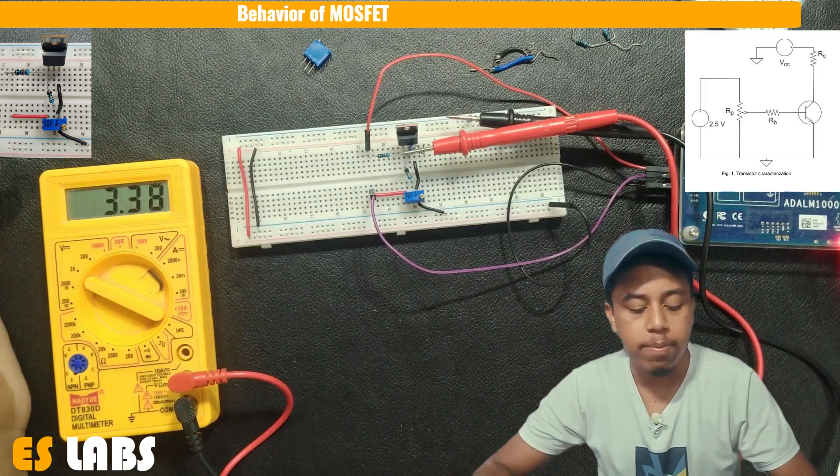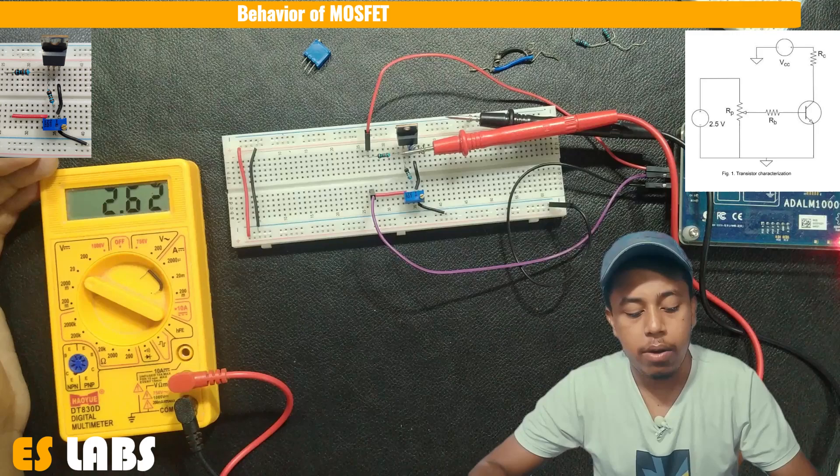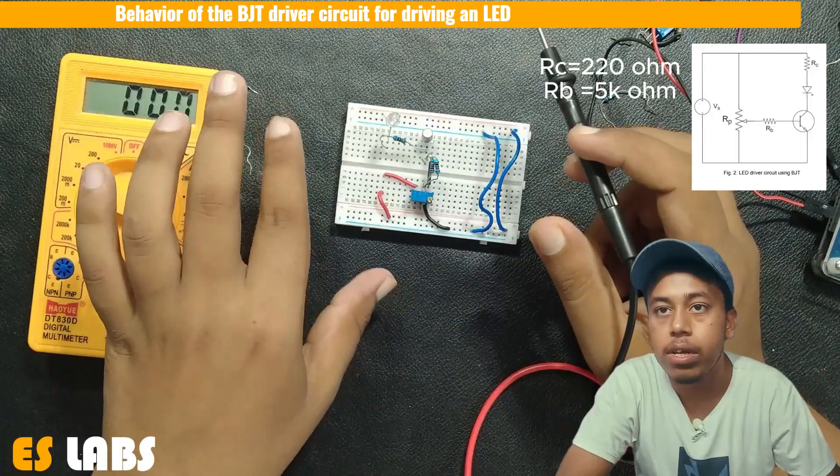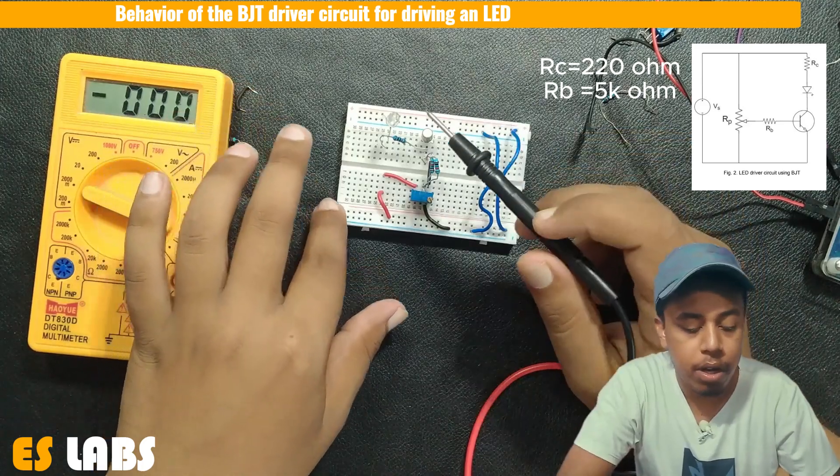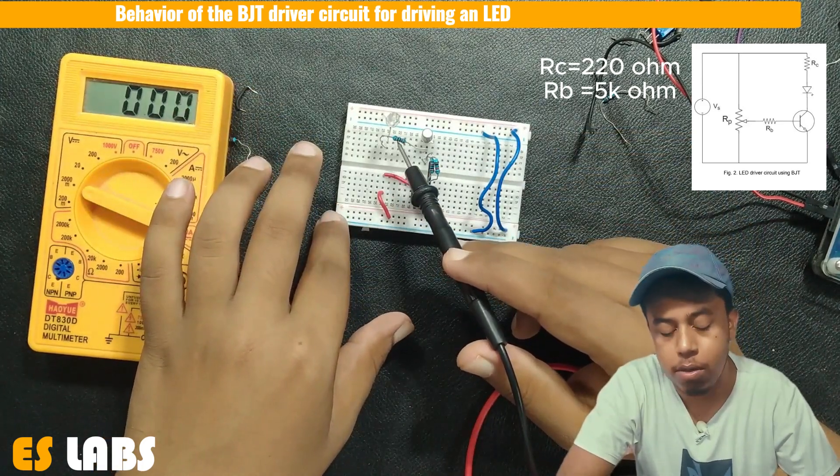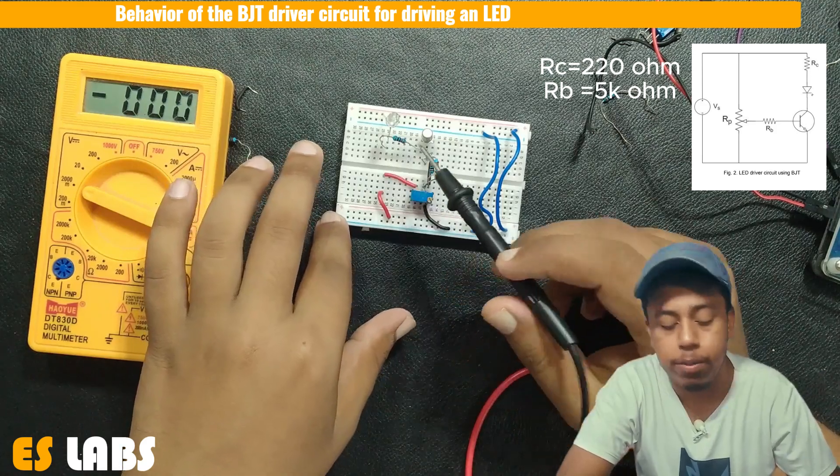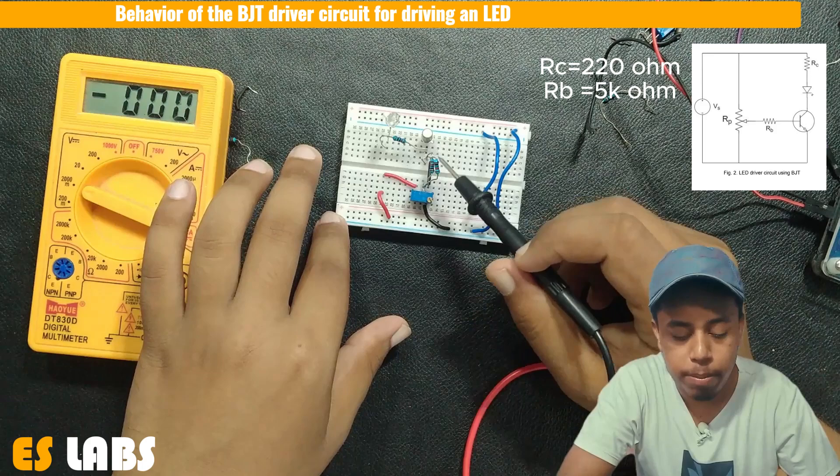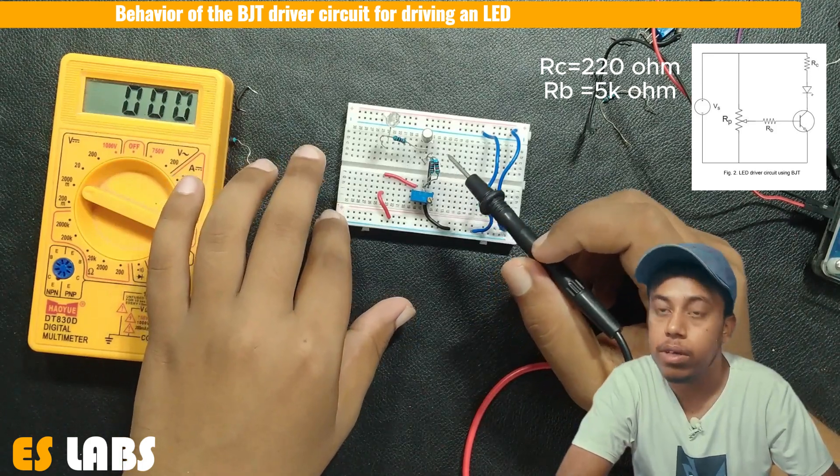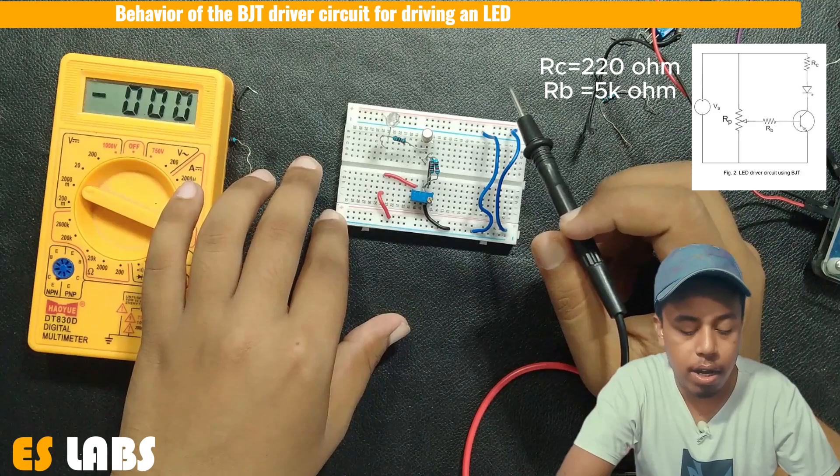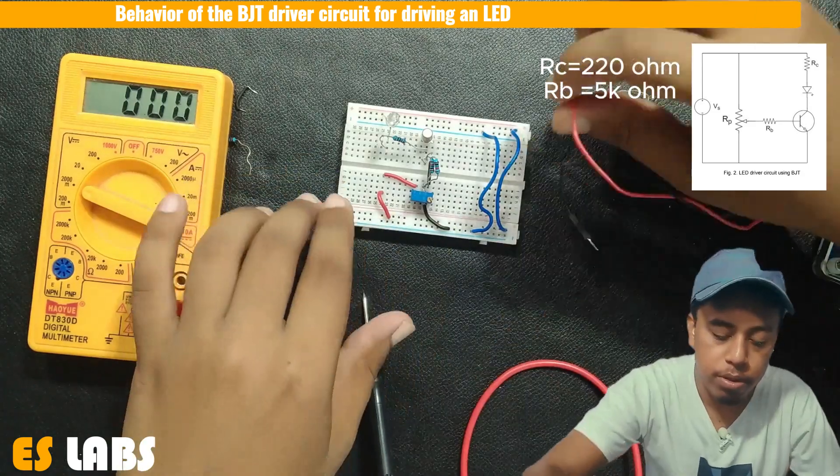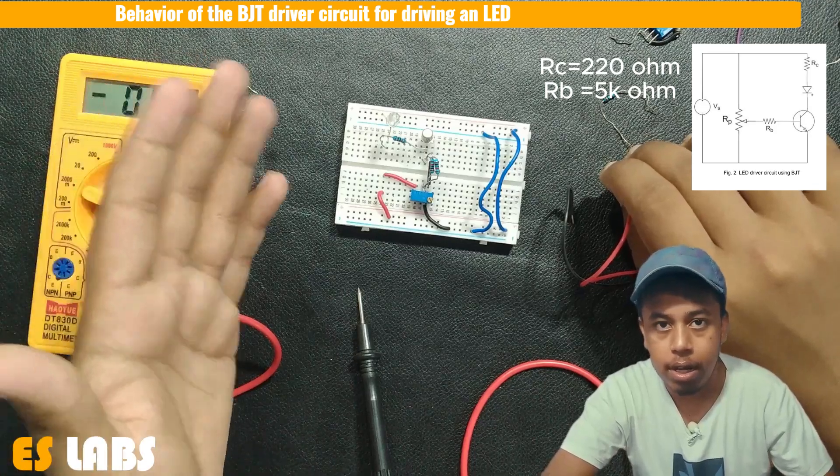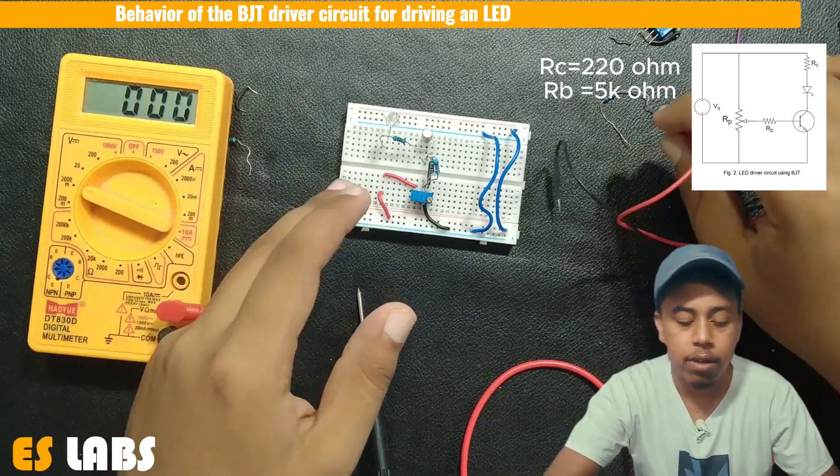So now we move to the second part of the experiment. We are going to drive an LED using the BJT. So this is the circuit for part 2. And I have connected this LED in series with this 220 ohm resistor. And the output of this potentiometer is connected to the base through a 5 kilo ohm resistor. And I am giving the 5 volt to this circuit now. In this part, we have to note the collector emitter voltage when LED is on and LED is off.